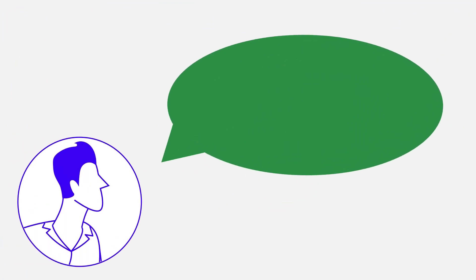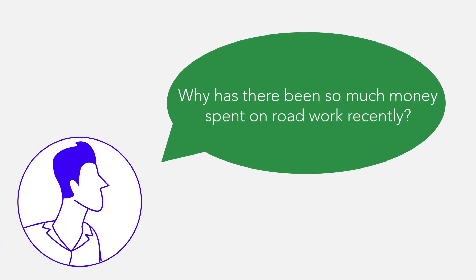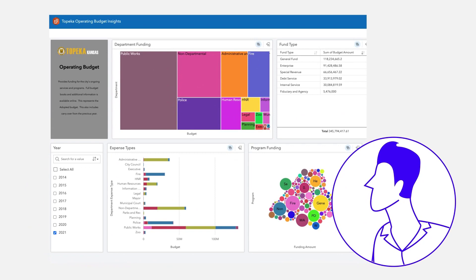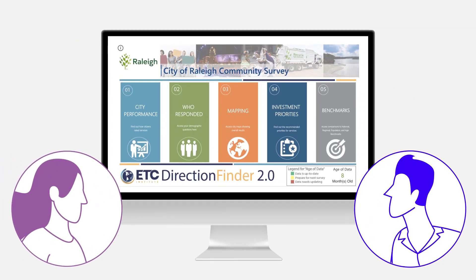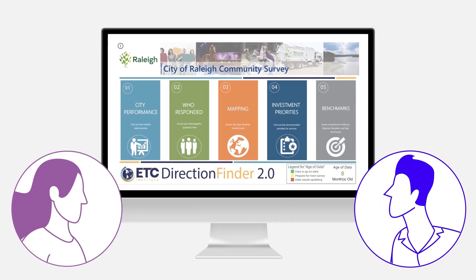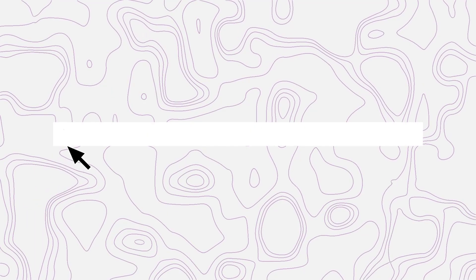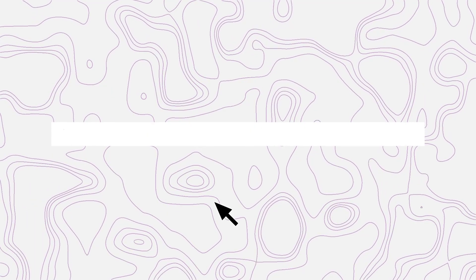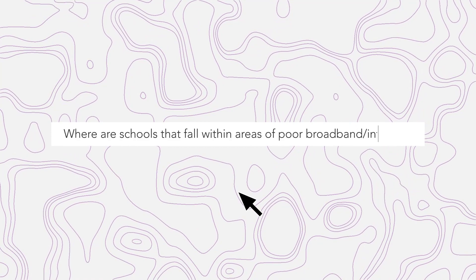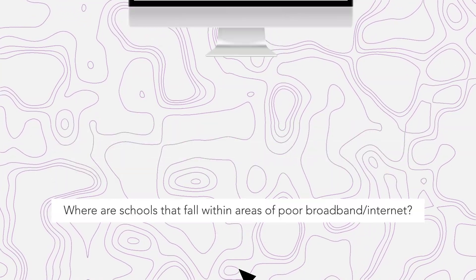With the push to make data open by default came greater calls in the public policy space for transparency and accountability. These words became synonymous with putting the data to work to demonstrate where money was being allocated, provide benchmarks for measurement, and present information in new ways the public could better understand and offer their feedback. And now a renewed focus on social and racial equity is raising new questions about equitable outcomes.